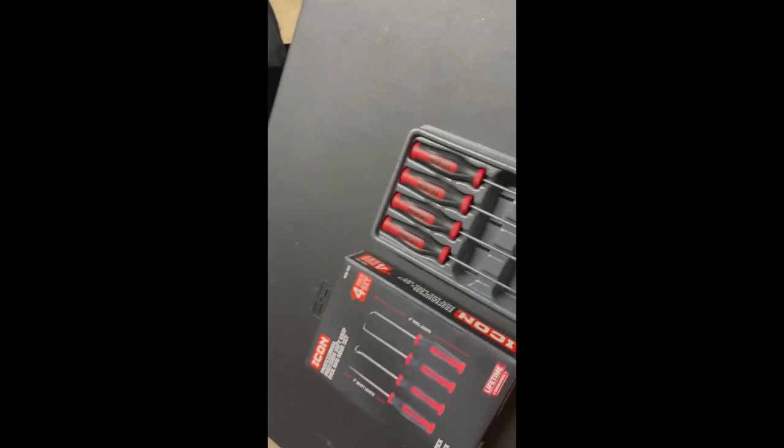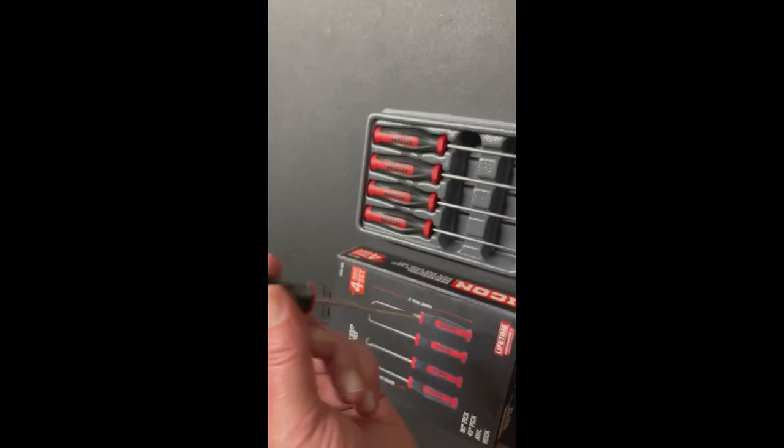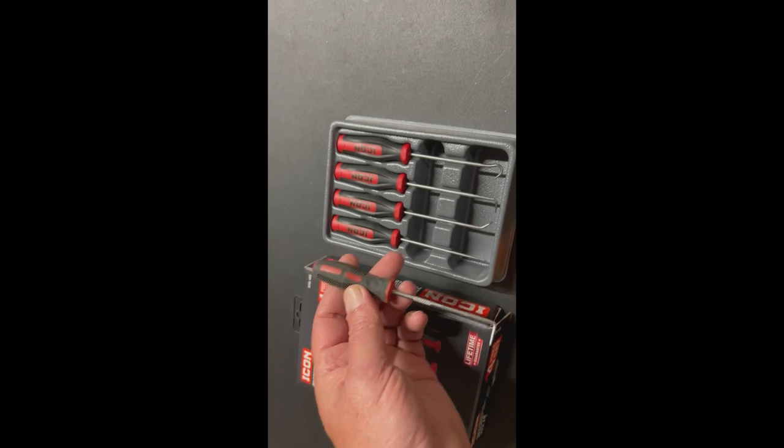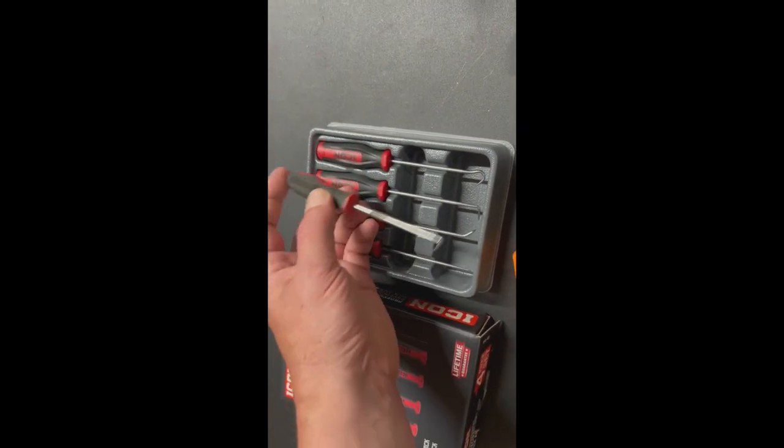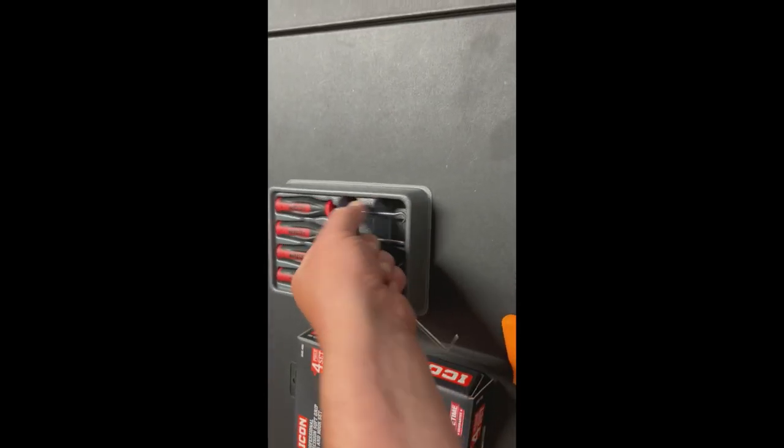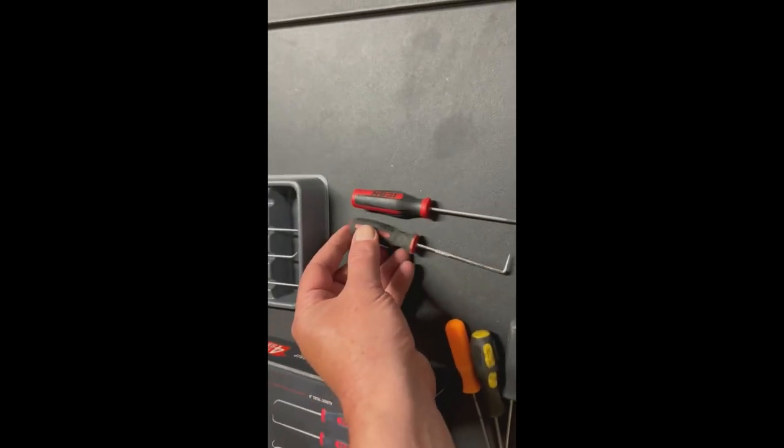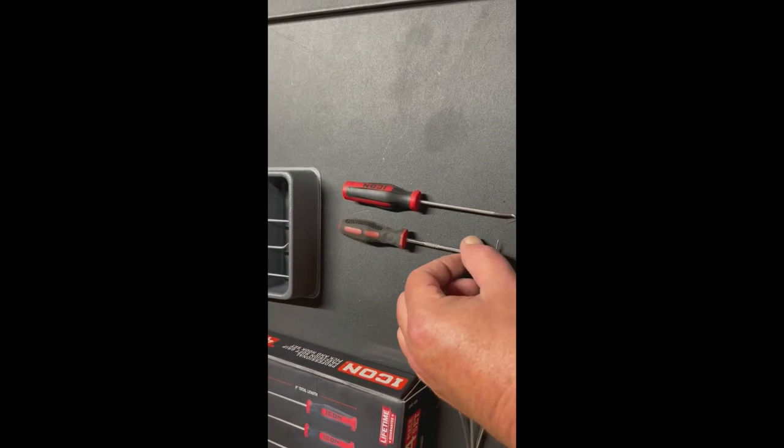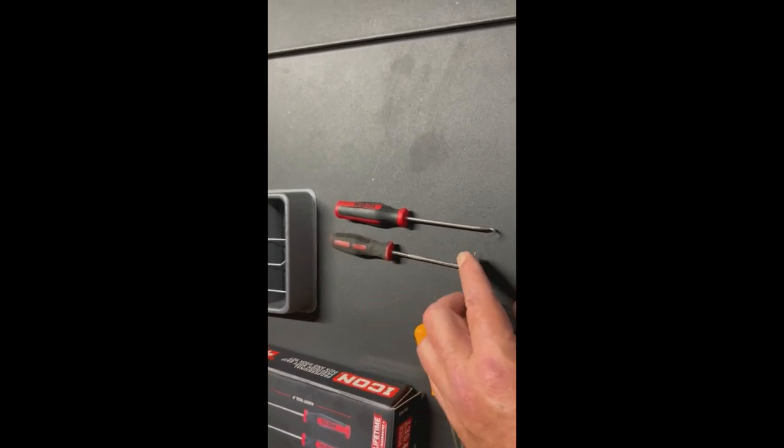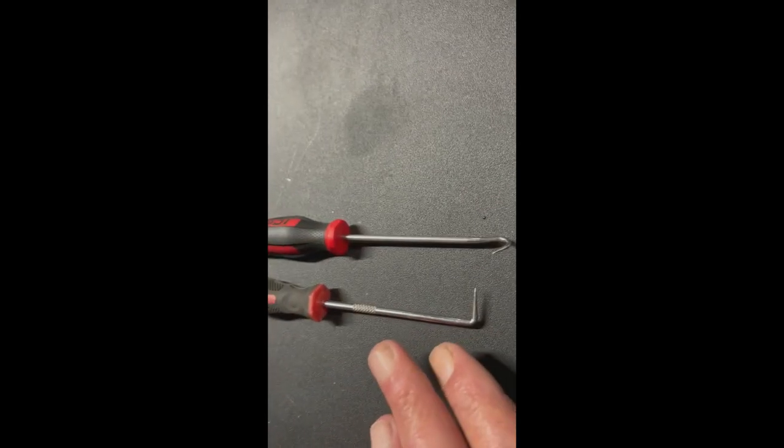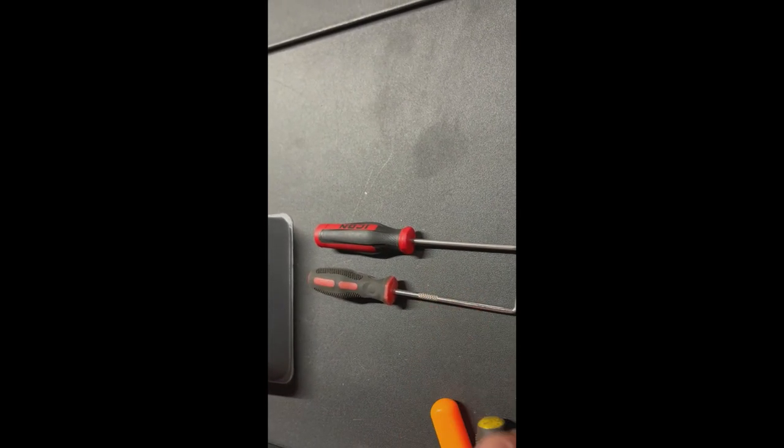Now this is a Tekton. Let's take them out. The handle is a little bit longer than a Tekton. On the Icon there's no knurling like on that one.